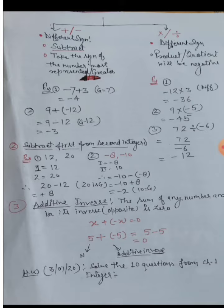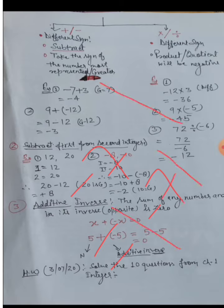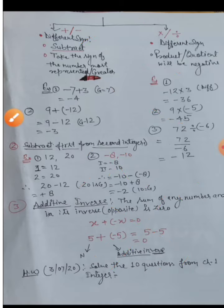Successor means adding one; predecessor means subtracting one. Absolute value means the numerical value of a given number only. For example, the absolute value of minus 7: we write minus 7 between two vertical lines, and the answer is just 7 — the numerical value without any sign.